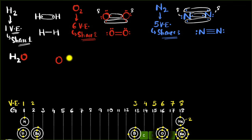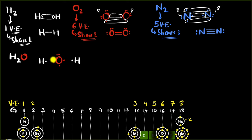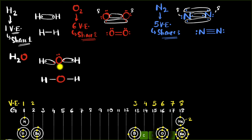So oxygen will be in the center and the two hydrogens will be connected to it. Oxygen has six valence electrons and is going to share two. Each hydrogen has one valence electron and shares it. Bond number one and bond number two form, giving us the structure. Do not forget the lone pairs on oxygen.